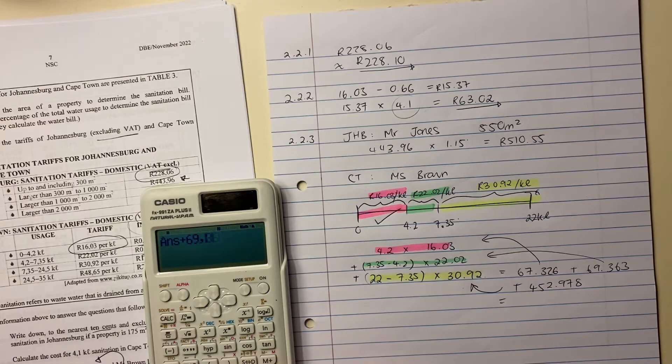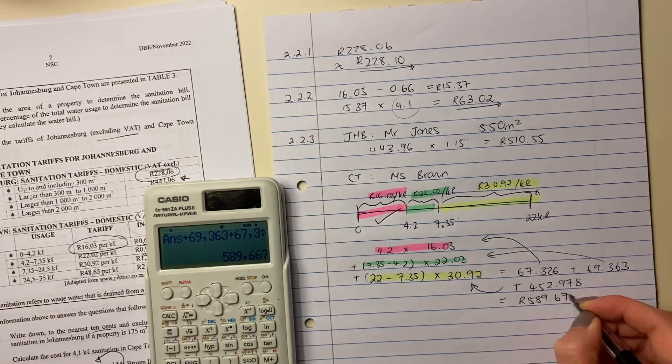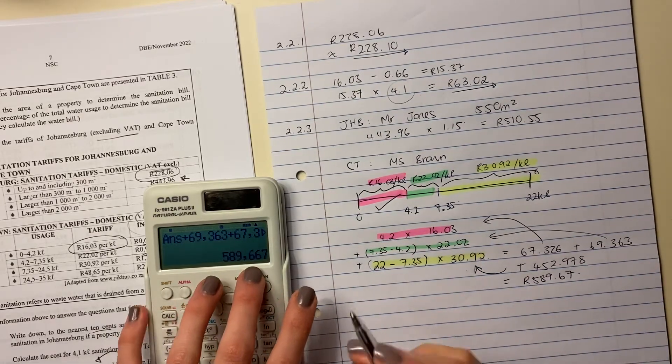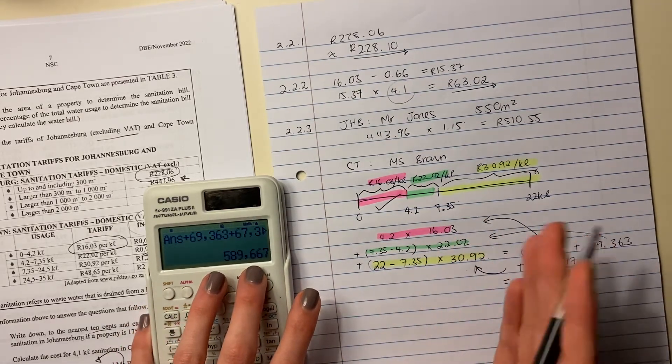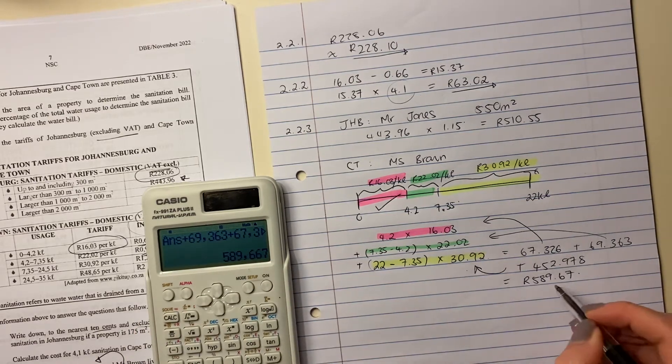69.363 plus 67.326. And the total amount there is 589.67. Why is it 6-7? Well, remember we have to round off our final answer to two decimal places because it's a currency. 7 is greater than 5. So we round up. Now we're not done.